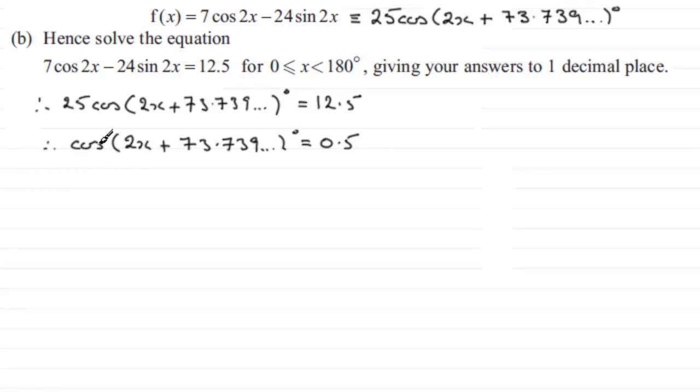Now I need to remove the cosine here, so I take the inverse cos of both sides. So if I do that, that just leaves me with the angle part here, 2x plus 73.739 and so on degrees is equal to the inverse cosine of 0.5.